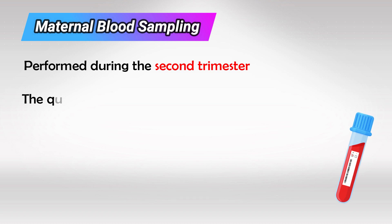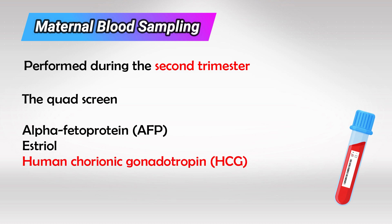We start with the least invasive, which is a maternal blood sample. We'll take a sample of the mother's blood during pregnancy and test it. This is known as the QUAD test. We look for alpha-fetoprotein, estriol, HCG, and inhibin A. An increase in HCG and inhibin A indicates a high chance of the fetus having Down syndrome.